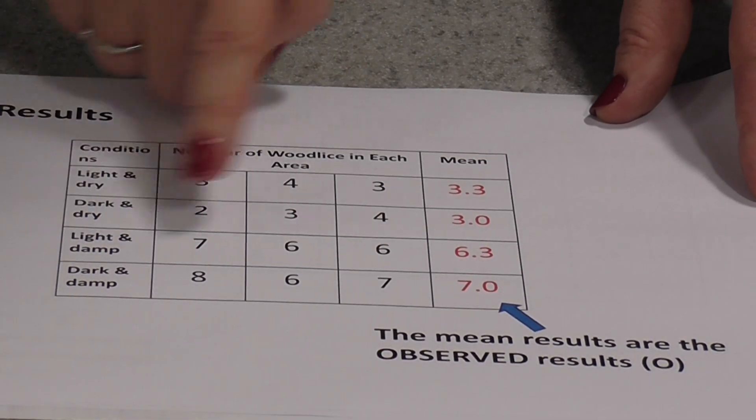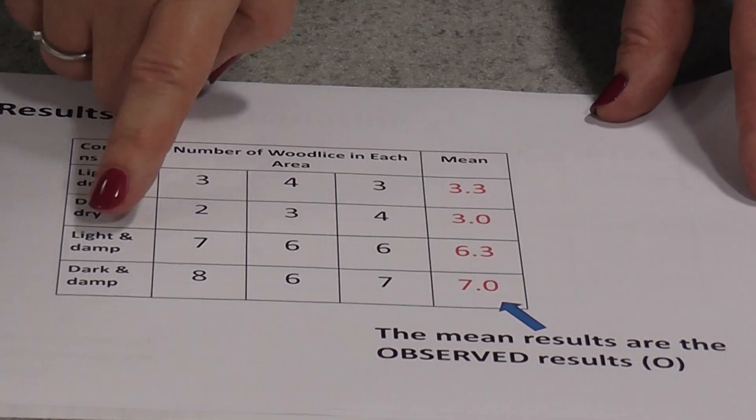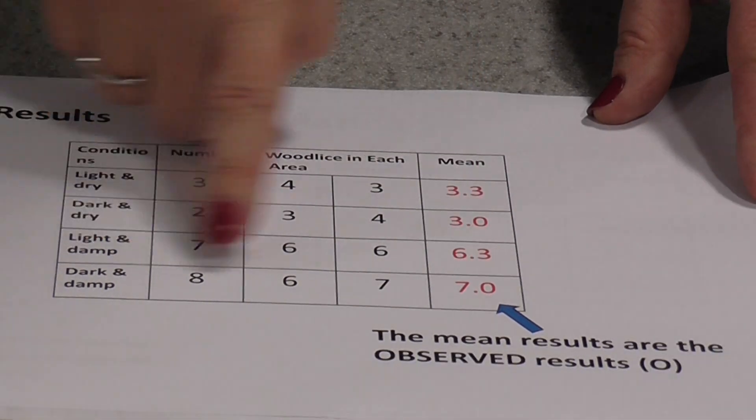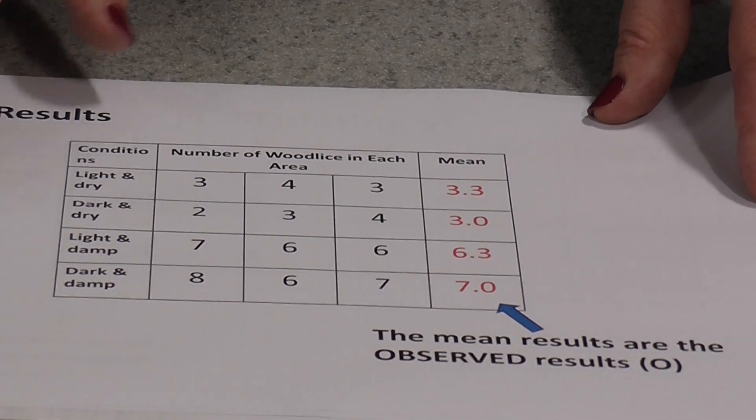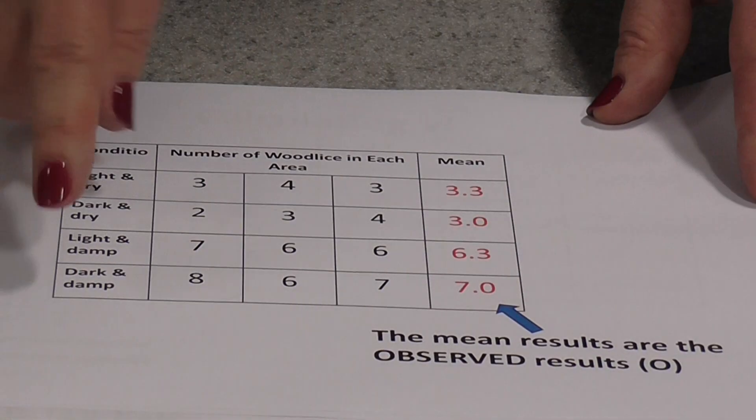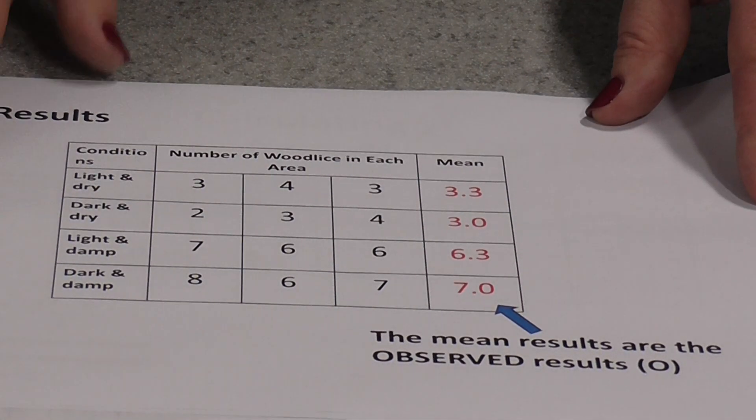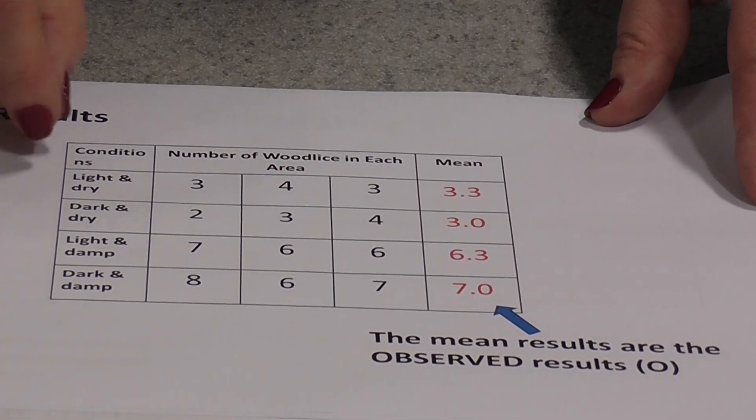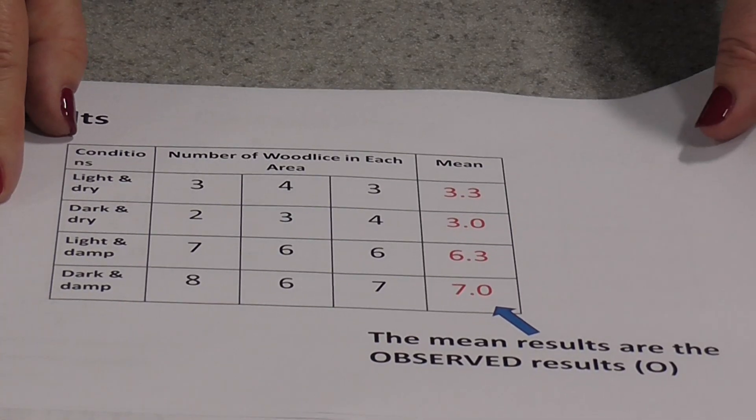Now looking at this, it does appear that the maggots seem to prefer damp conditions and they do seem to prefer dark damp conditions to any others, but we cannot draw a valid conclusion from these observations. As scientists, we have to carry out some kind of statistical analysis.